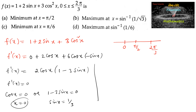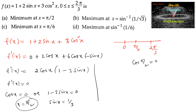When cos(x) = 0, in the interval 0 to 2π/3, only cos(π/2) = 0, so x = π/2. When sin(x) = 1/3, we compute cos(x) using the right triangle: cos(x) = √(9−1)/3 = √8/3.